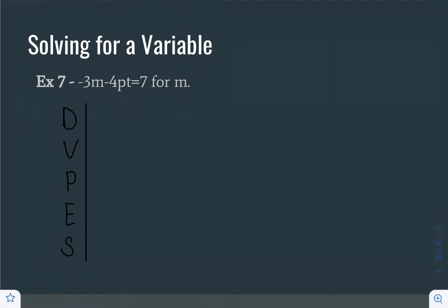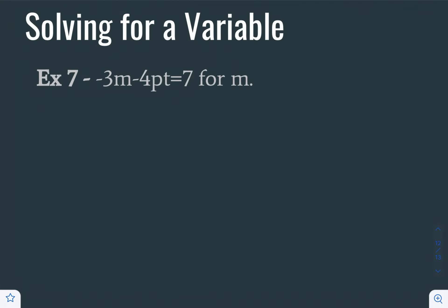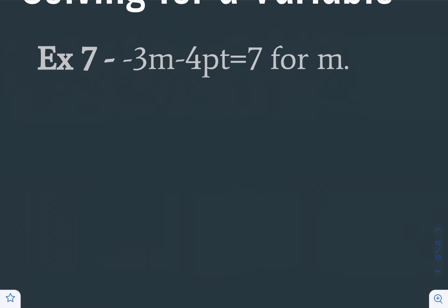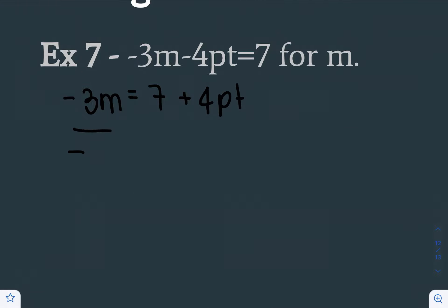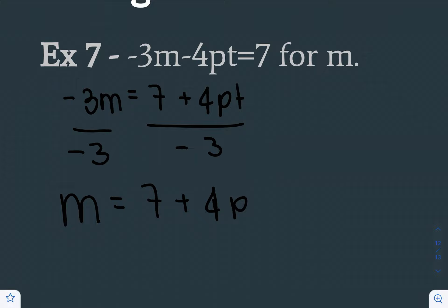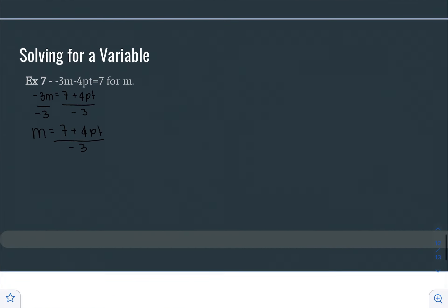Example 7: Negative 3m minus 4pt equals 7, and we're solving for m. We add 4pt to the other side to get negative 3m equals 7 plus 4pt. Now we divide both sides by negative 3, so m equals 7 plus 4pt divided by negative 3.